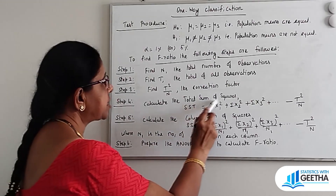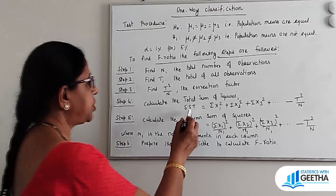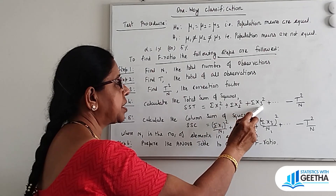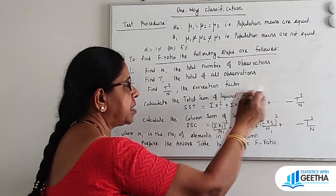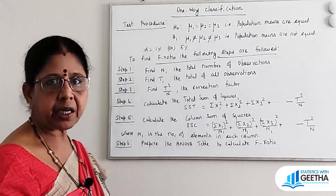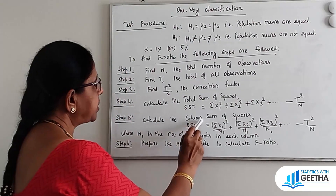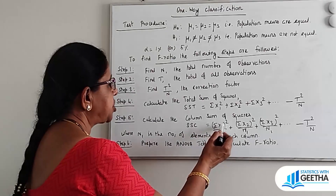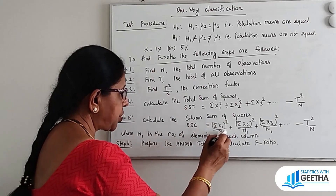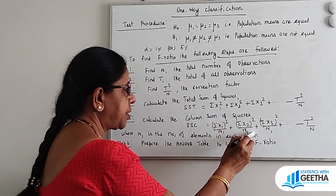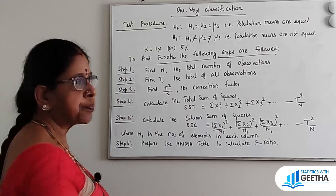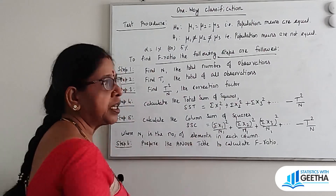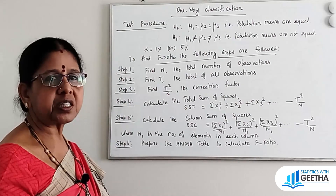Step 4: Calculate the Total Sum of Squares, denoted by SST, which equals the summation of x₁² + x₂² + x₃² + ... minus T²/N. Step 5: Calculate the Column Sum of Squares, denoted by SSC, which equals (ΣX₁)²/n₁ + (ΣX₂)²/n₁ + (ΣX₃)²/n₁ + ... minus T²/N, where n₁ is the number of elements in each column.